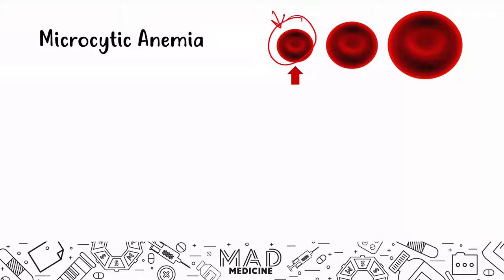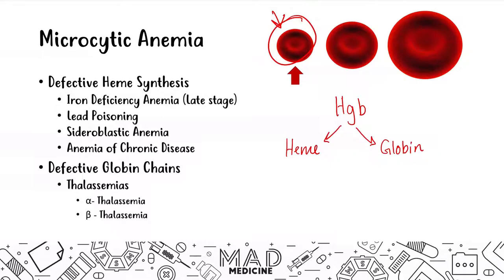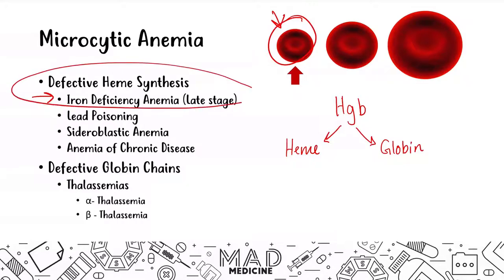What are the causes of microcytic anemias? It's going to be any defect in hemoglobin production. If you have a defect in hemoglobin, you are going to present with microcytic anemia. This can be a defect with the heme synthesis pathway or a defect in the globin chains themselves. In a heme synthesis defect pathway, that is where late-stage iron deficiency anemia sits. Everything we're discussing today is classified under the heme synthesis defect for microcytic anemia.